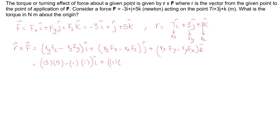f_x is -3, minus r_x is 7 and f_z is 5, and then r_x is 7, f_y is 1, minus r_y is 3 and f_x is -3 k unit vector.